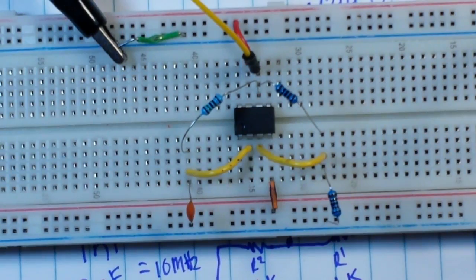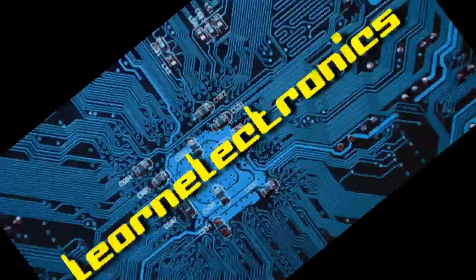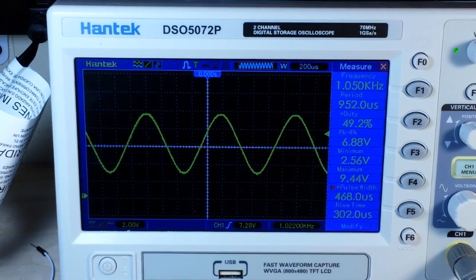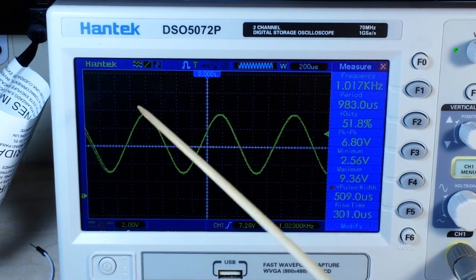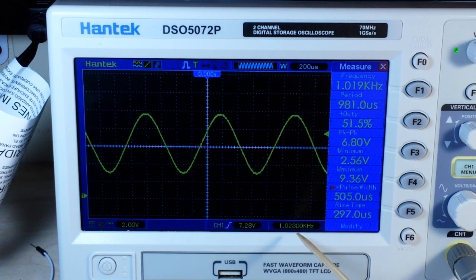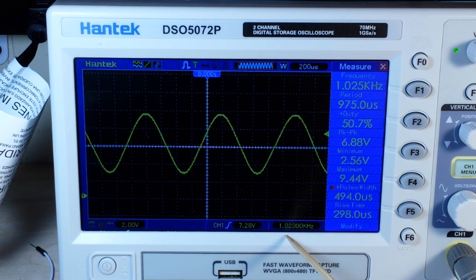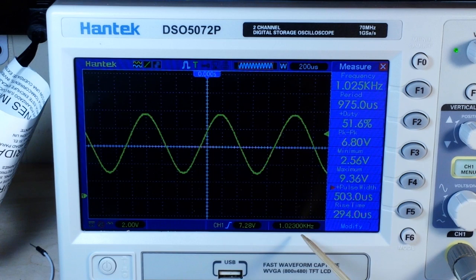So let's take a look at the output on a scope. All righty, there we have the results. We've got a nice sine wave there at a frequency of 1.023 kilohertz.